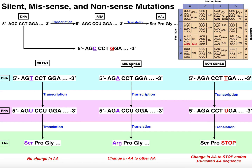Now let's look at an example of a missense mutation. In this case I'm going to mutate the same cytosine, but this time to an adenine. So now my gene is going to be AGA, CCT, GGA, and it goes on. Transcribing that into mRNA — everything's the same except T's become U's — so it's AGA, CCU, GGA. Just like in the silent mutation, codons 2 and 3 didn't change, so those are still proline and glycine.